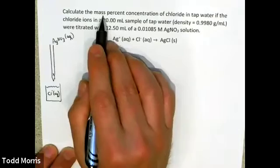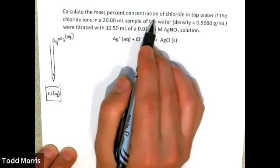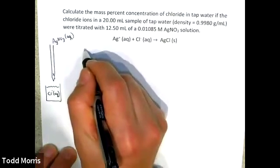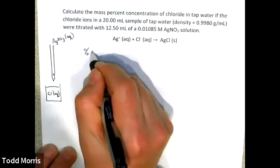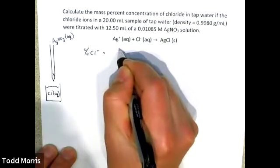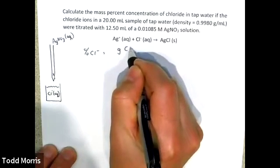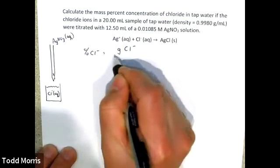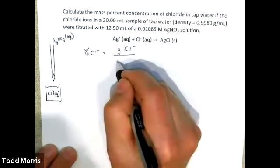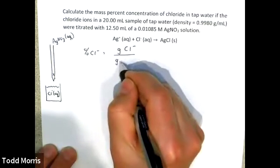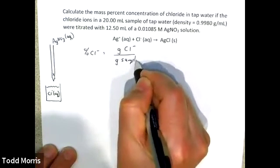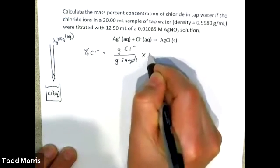To begin, let's start with what we mean by mass percent concentration. Mass percent concentration is defined as the mass of what we're interested in — in this case, grams of chloride — compared to the mass of the sample in grams, times 100%.